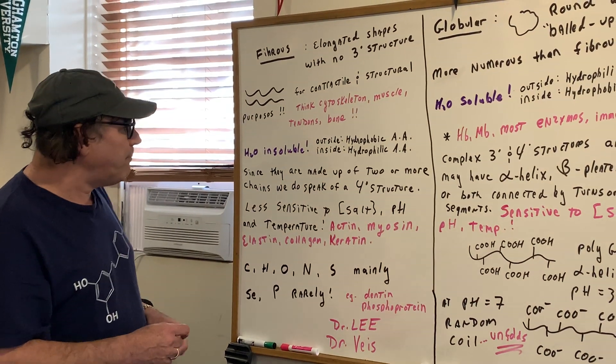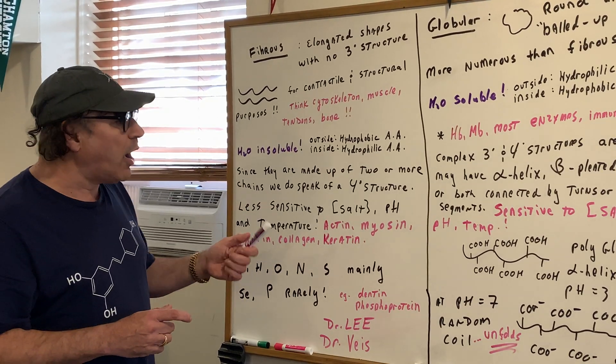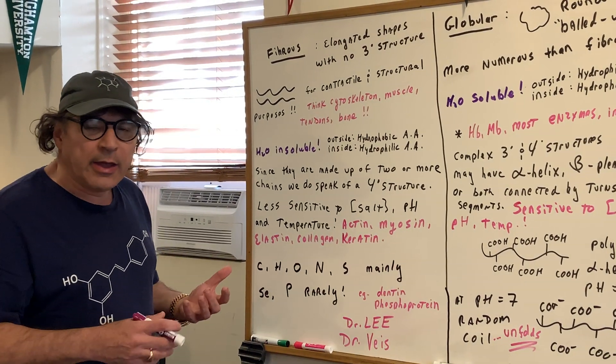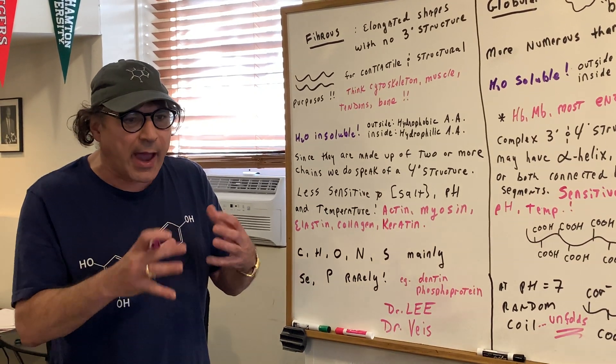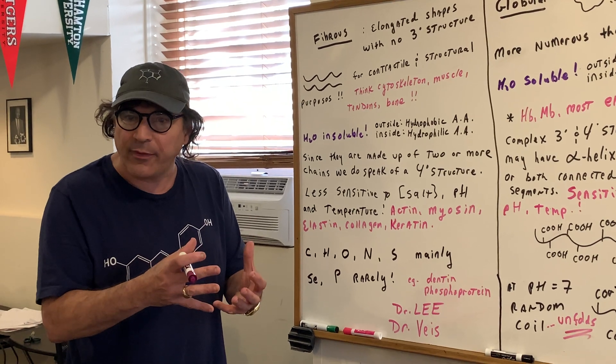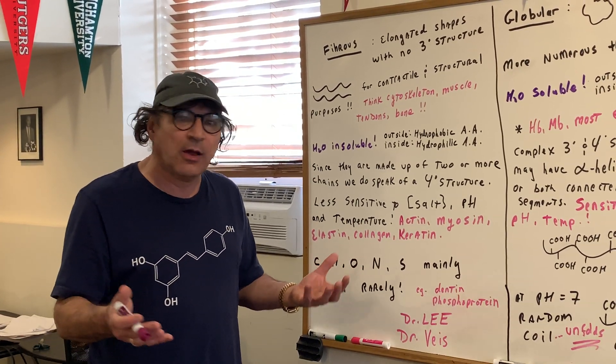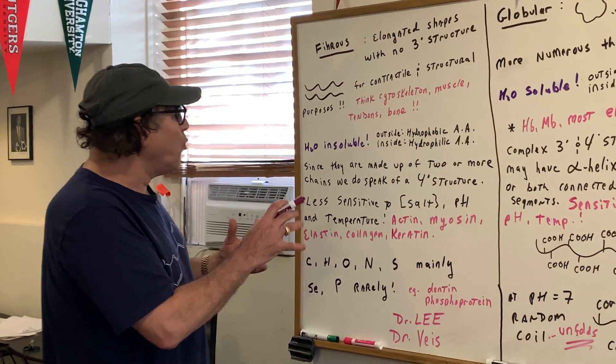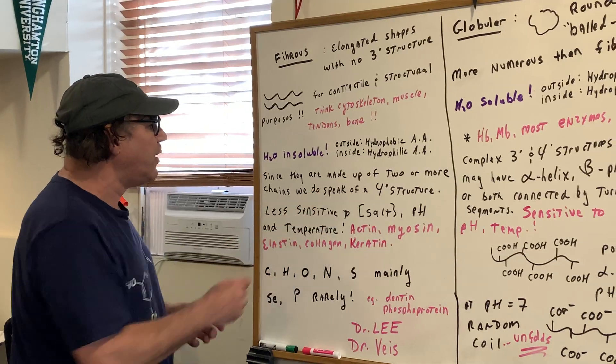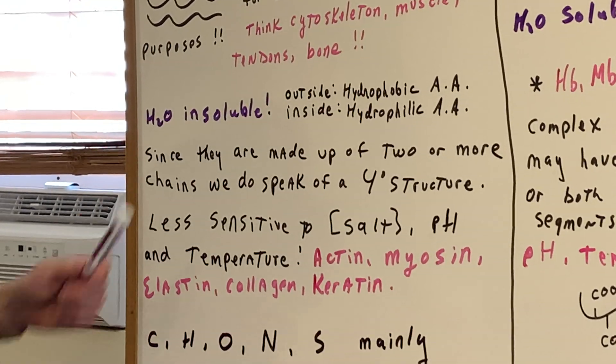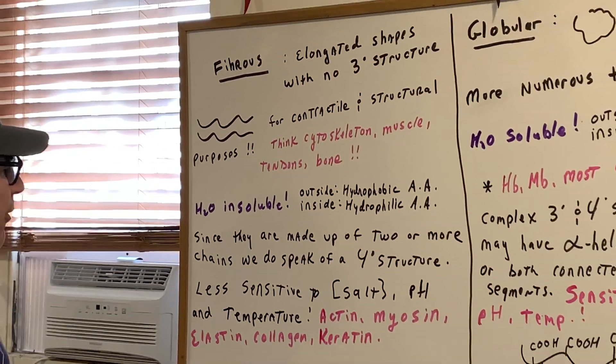Now since they're made up of two or more chains, we do speak of a quaternary structure. If you remember, a quaternary structure, which I'll go over with you in a little bit, means how one chain interacts with another chain. For instance, collagen we see is a triple helix. So therefore, the way one chain interacts with another chain is what we call the quaternary structure. So even though there's no tertiary structure to speak of, we do indeed have a quaternary.